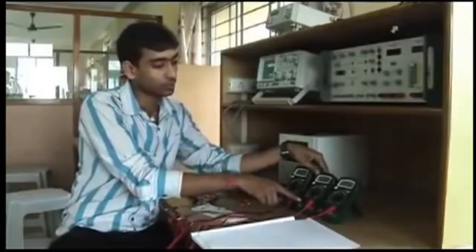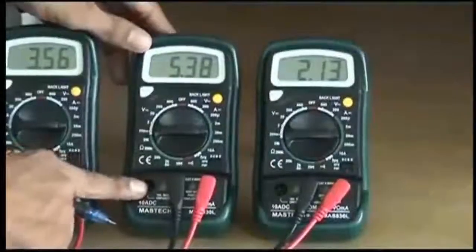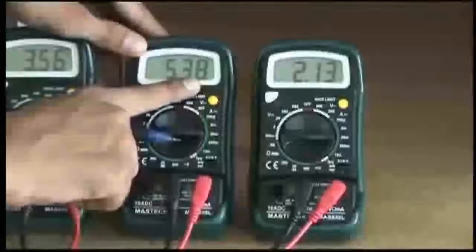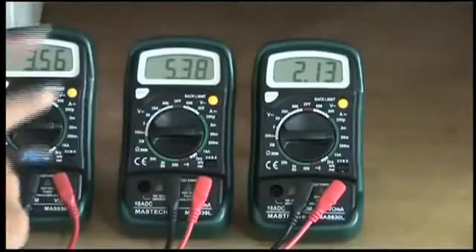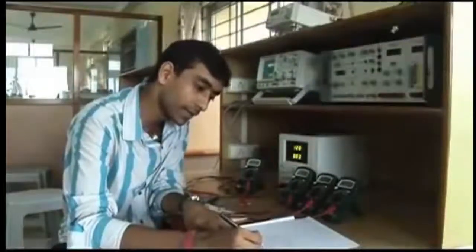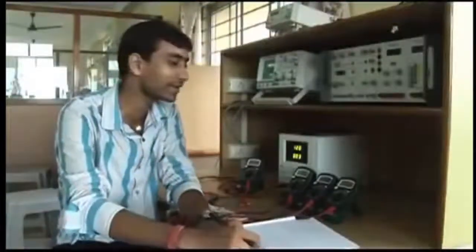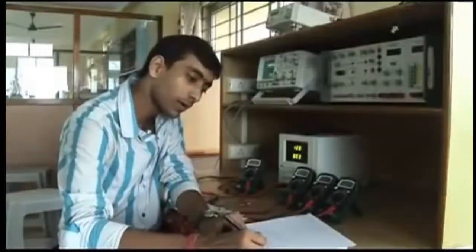Again coming back to the second branch that is through R2, what is the amount of current flowing? It is showing 5.38 milliampere is the amount of current flowing. So again that thing we will write down here, 5.38 milliampere plus. So we have written total is equal to first plus second plus third. Third I am not going to show you over there, I am directly writing by saying it is 2.13.